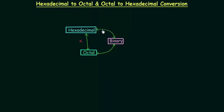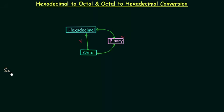So we have to follow this path: if you want to convert hexadecimal to octal, first you have to convert it to binary, then convert that binary number to octal. If you want to convert octal to hexadecimal, you repeat the process in reverse direction. This will be more clear when we solve a few examples.